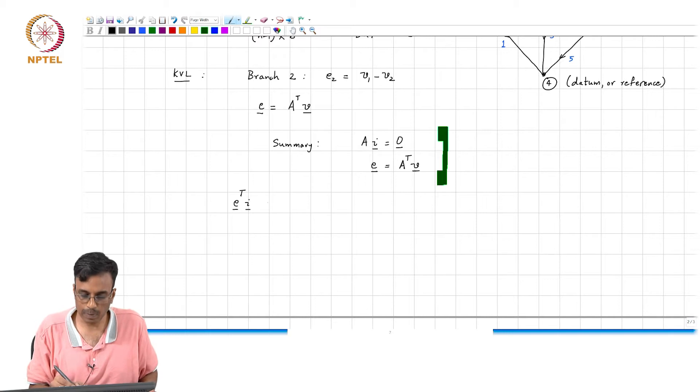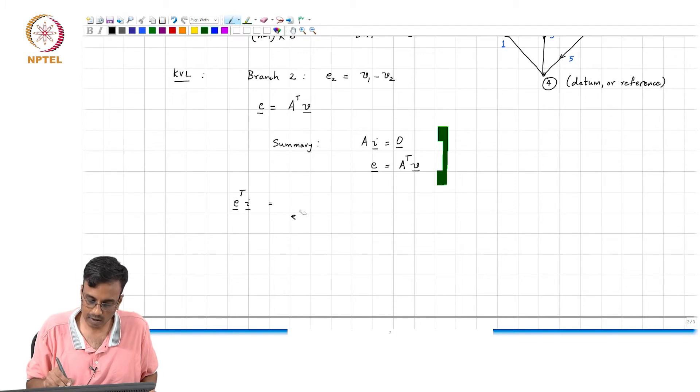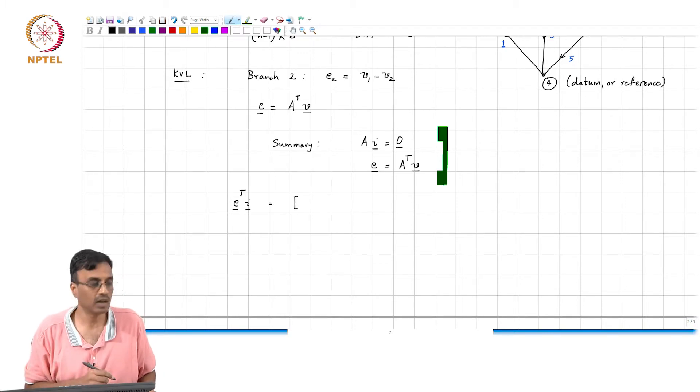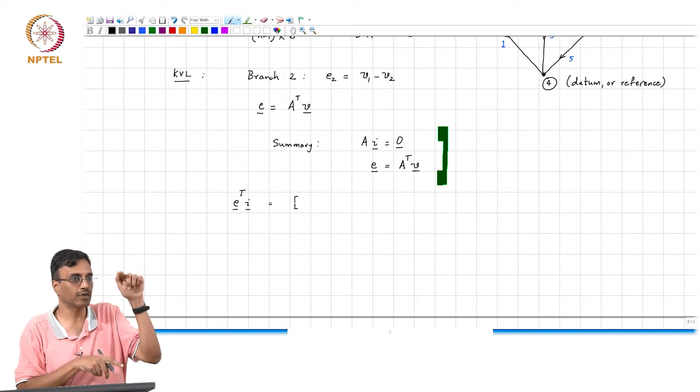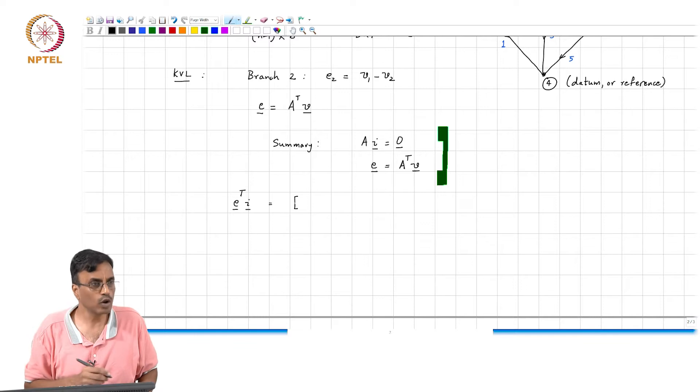This is nothing but, in our particular case, we sum over all the branches. Let me write this out in full form. E is a column vector, so E transpose is a row vector. Now, how does that look? E1, E2, all the way to E6.